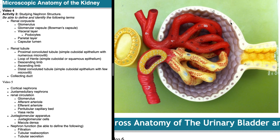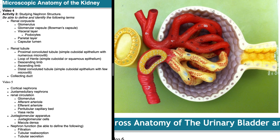To be precise, when pointing to Bowman's capsule you should distinguish: the parietal layer on the outside and the visceral layer made of podocytes on the inside. Between them is an open space called the capsular lumen — this is literally where plasma is being filtered into. The capsular lumen is bounded internally by the podocytes and externally by the parietal layer of Bowman's capsule.